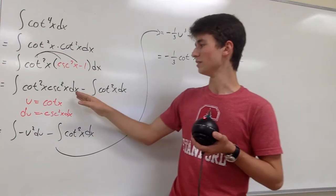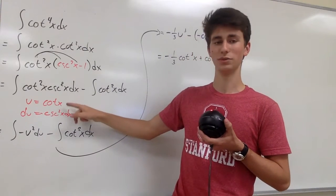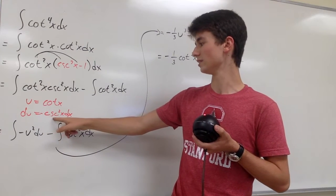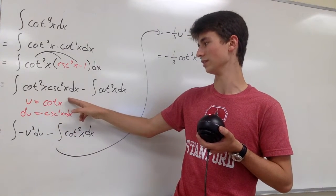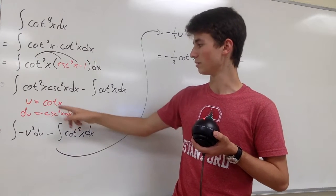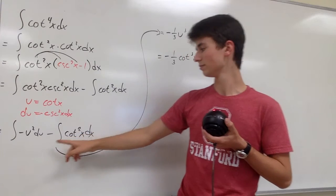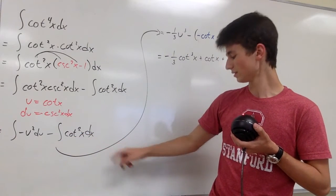But for this part, we can use a u substitution, where u is equal to cotangent of x, and du is equal to negative cosecant squared of x when we differentiate cotangent of x. And we can plug this back into here to get negative u squared du minus the cotangent squared of x.